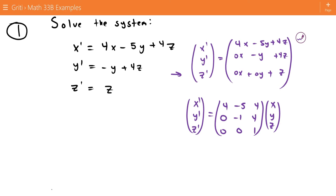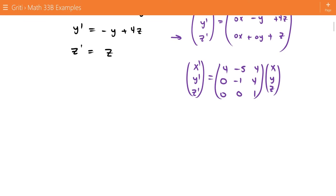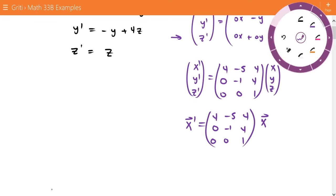And the numbers in the matrix are just the coefficients on our x, y's, and z's. And then we can just call this x prime, and we can just call this x, actually we'll just call this A.